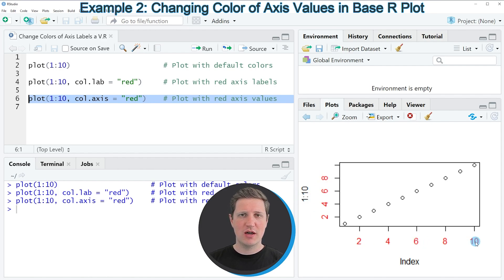If you would like to color both the labels and the values in red, you would have to specify both arguments col.lab and col.axis to be equal to red. In this video, I've shown you how to change either the labels or the axis values to a different color.